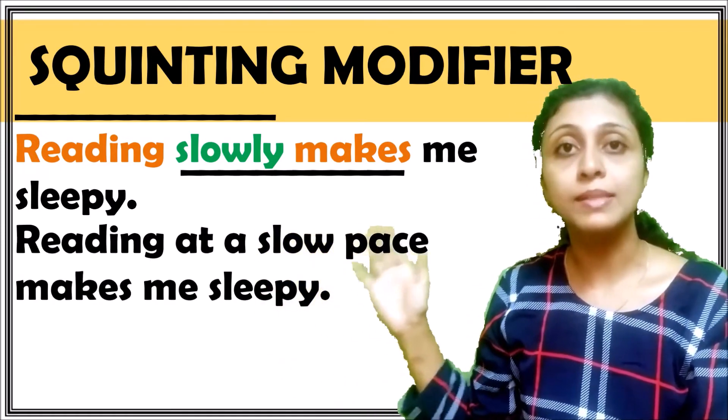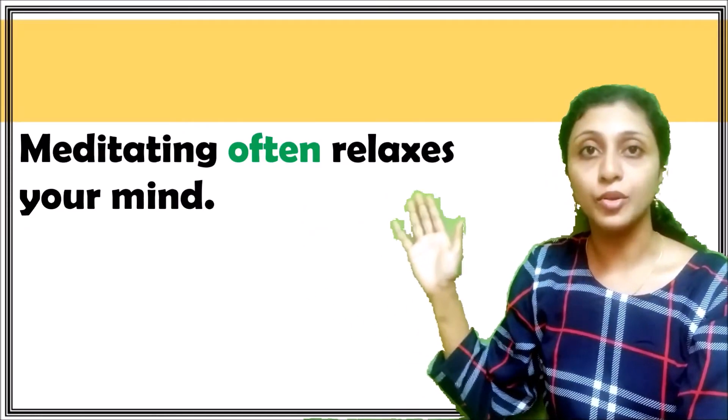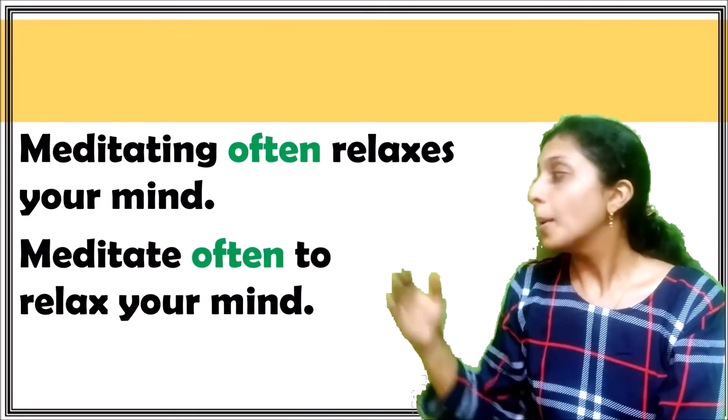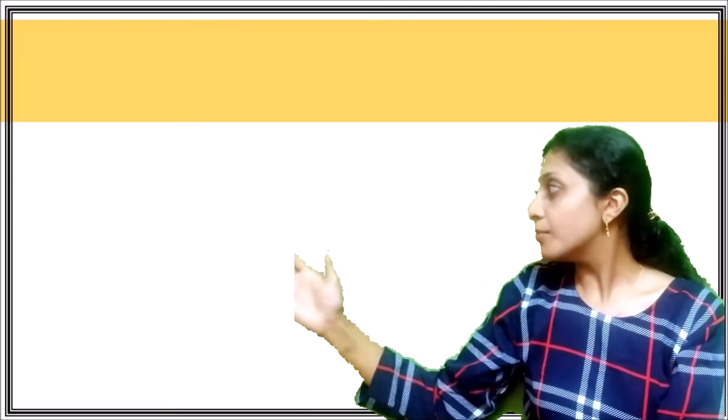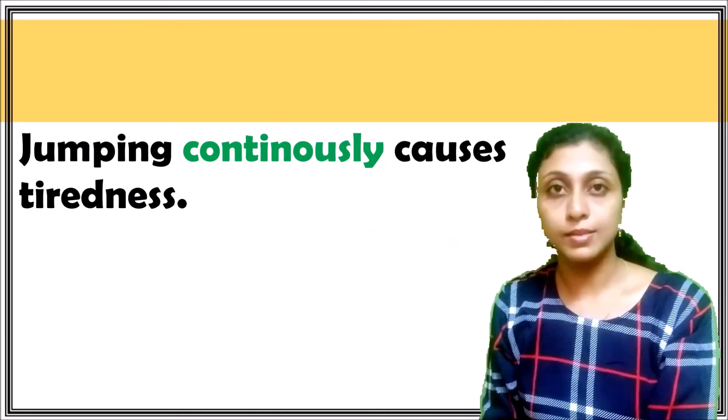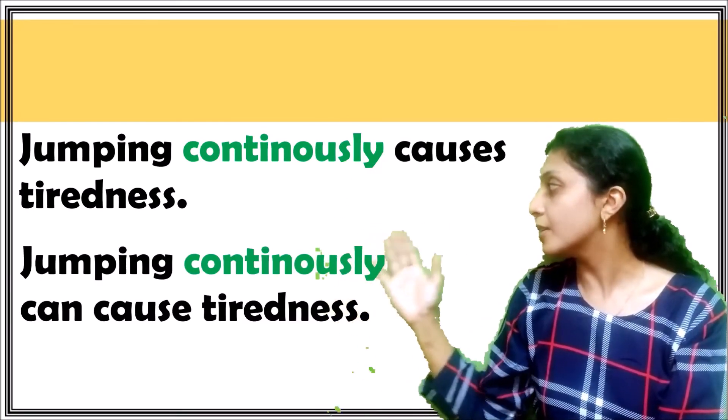Now you don't have the confusion. 'Meditating often relaxes your mind' can be rewritten as 'Meditate often to relax your mind.' 'Jumping continuously causes tiredness' can be rewritten as 'Jumping continuously can cause tiredness.' We have identified how to rewrite sentences that have squinting modifiers. Next time you see a squinting modifier, make sure you correct it using the methods discussed. Thank you for watching.